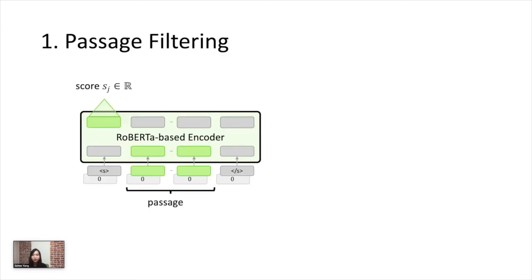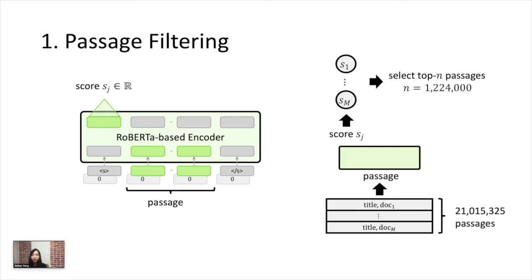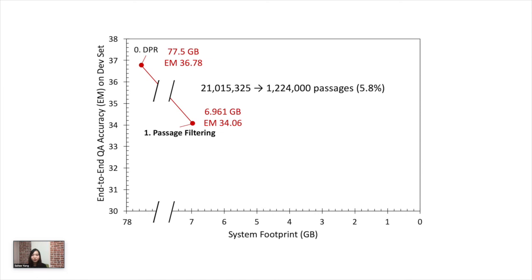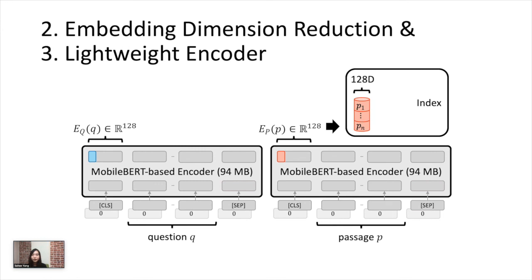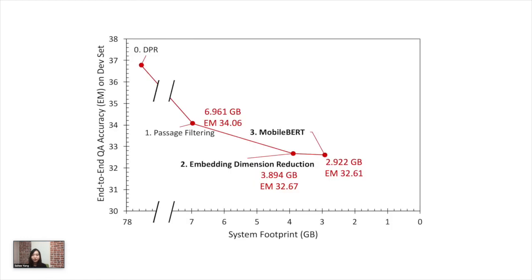First, we train a binary classifier with logistic regression to give low scores to the passages that are relatively unlikely to hold the answers to the most frequently asked questions. We score all the 21 million passages in Wikipedia and select only the top-scoring 1.2 million passages to be included in our system. This drastically reduces the system footprint with some sacrifice of accuracy. Next, we change the retriever. The original DPR retriever has two separate BERT-based encoders, which makes 768-dimensional question and passage embedding vectors. We change the encoders to MobileBERT and use only the first 128 dimensions for retrieval. Then, the index size is reduced by 6 times, and the size of the retriever encoders is reduced by about 4 times.